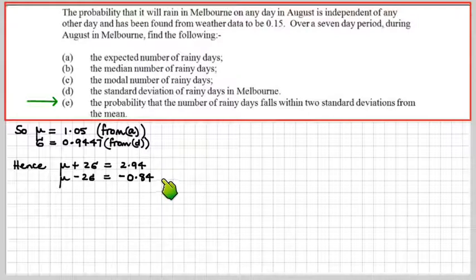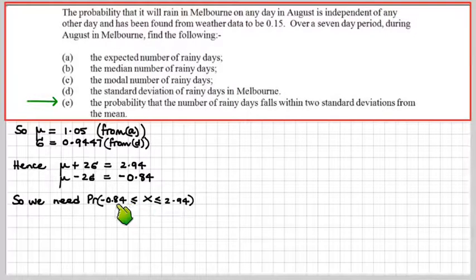If we're working out μ plus or minus 2σ, it's quite conceivable that we can actually get a value in the negative. But that's just a theoretical range. Don't worry. We're not going to be quoting negative values of the actual variable X. We just have to make sure that the range of X values that we use have to be wholly contained within this interval from minus 0.84 up to and including 2.94.